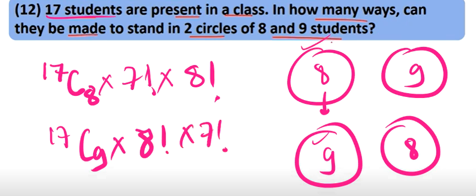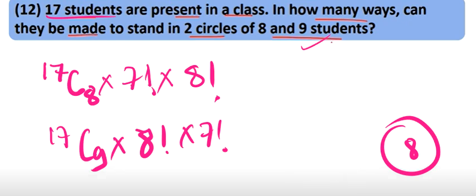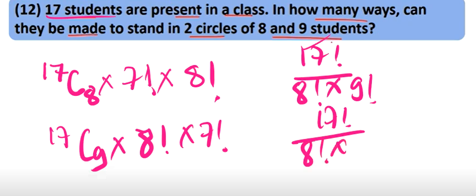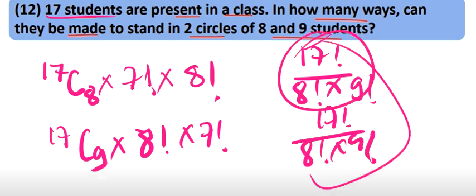If you want to open it, then how can we read? 17C8 is 17 factorial divided by 8 factorial multiplied by 9 factorial. Both answers will be the same.